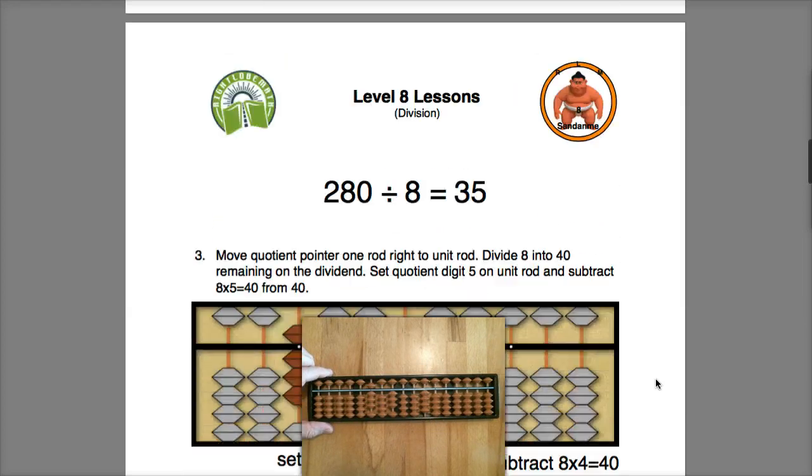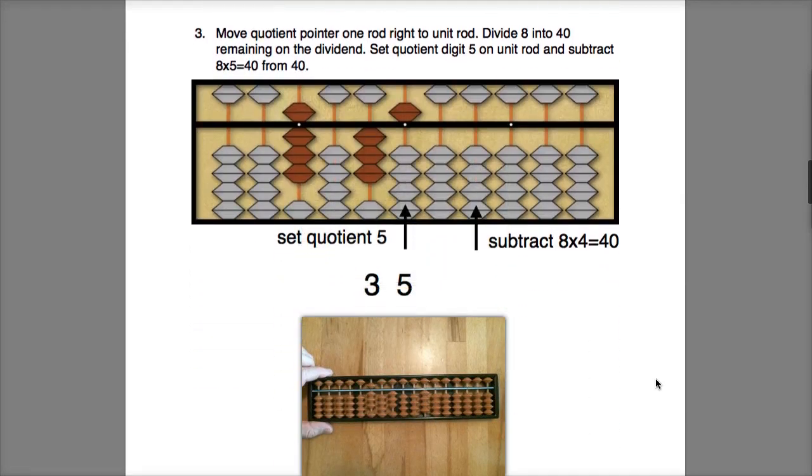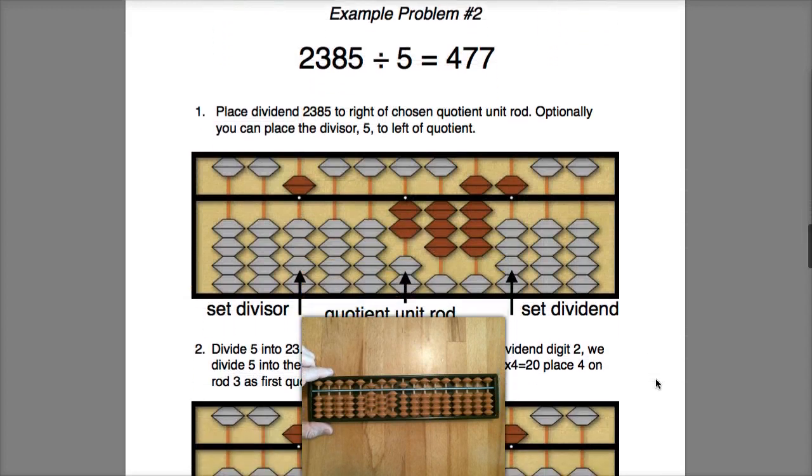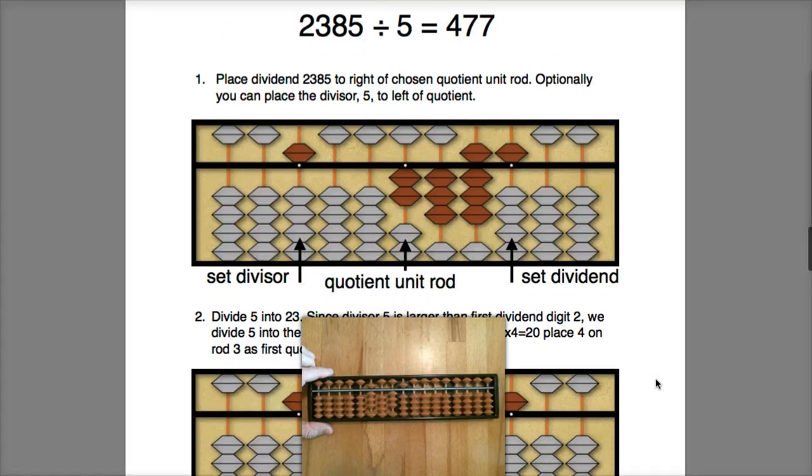Okay, so now we'll continue on and divide the 8 into the remaining 40 on the dividend. 8 times 5 is 40 and that will clear the dividend, so I have a final answer of 35. So as you can see, long division on the Soroban, once you know your multiplication facts to 9 by 9, is pretty straightforward.